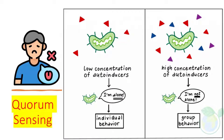Bacteria integrate information from the environment, such as quorum sensing autoinducers and nutrients, into appropriate biofilm-related gene expression. The identity of key players, such as cyclic dinucleotide second messengers and regulatory RNAs, are beginning to be uncovered.